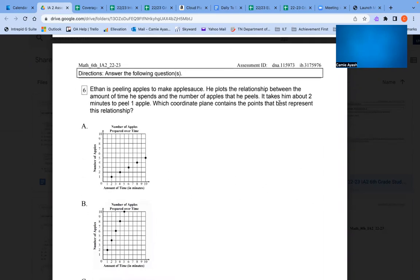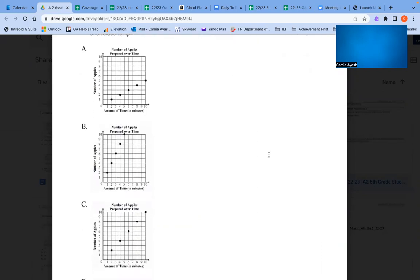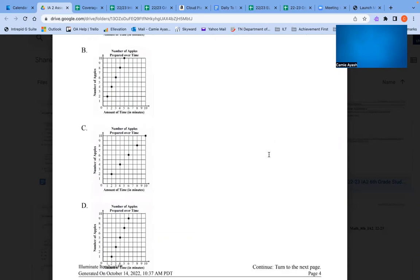Number 6: Ethan is peeling apples to make applesauce. He plots the relationship between the amount of time he spends and the number of apples that he peels. It takes him about two minutes to peel one apple. Which coordinate plane contains the points that best represent this relationship? A, B, C, or D?